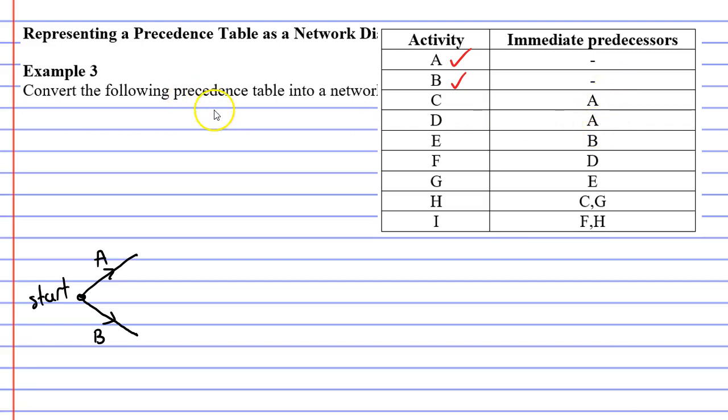So in order for those edges to be drawn, we first need to complete activity A. We'll do that by drawing a vertex. And both activities C and D come out from that vertex. So we'll tick them off because they have been drawn.